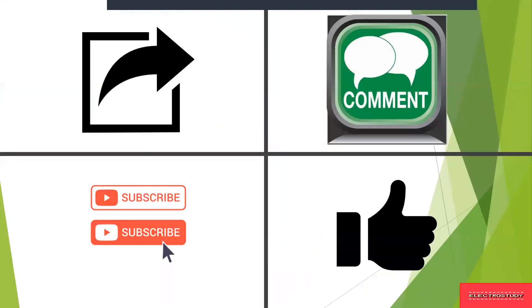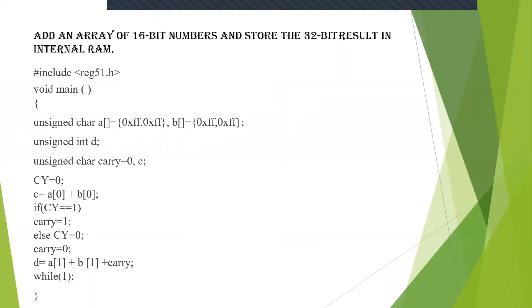Now please do like, share, subscribe and comment. Let's go into the video. In other series of videos, I have explained how to dump the code, save the code, and run the code. Here I will be just explaining how a 16-bit number is added and stored in a 32-bit result.